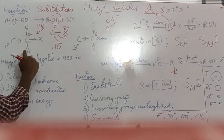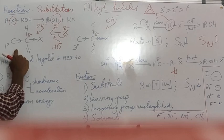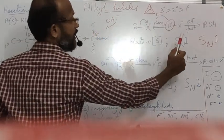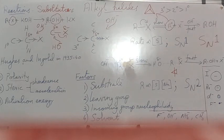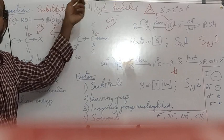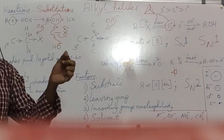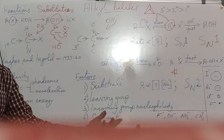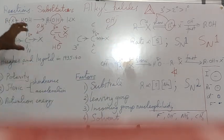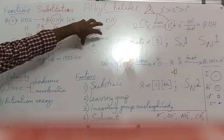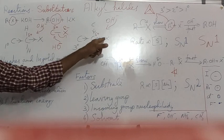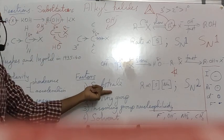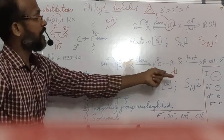So, for primary alkyl halide the substitution reaction follows SN2, and for tertiary alkyl halide the substitution reaction follows SN1. Now, what are the factors that influence whether a substitution reaction of an alkyl halide is SN1 or SN2? The first factor is the nature of the substrate. We have already discussed this: whether the carbon bearing the halogen is primary or tertiary determines which mechanism operates.